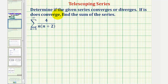In this example, we're asked to determine if the given infinite series converges or diverges, and if it does converge, we're asked to find the sum of the series. Looking at the formula for a sub n, if we perform partial fraction decomposition, we'll have a telescoping series, which we can use to determine if the series converges or diverges.